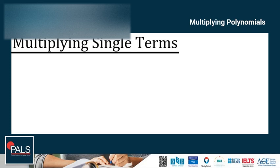Let's start with multiplying single terms. Recall that according to the laws of exponents, when you multiply two exponents with the same base, the exponents are added. This still applies in multiplication involving variables. When multiplying single terms, you will multiply the coefficients and then add the exponents if the variables are the same.